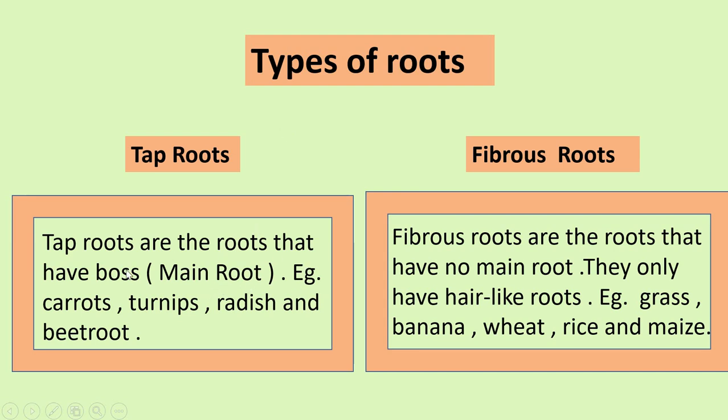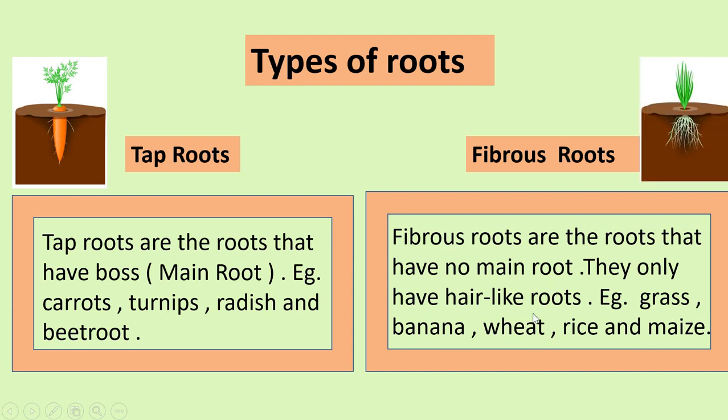Now, what are tap roots? Tap roots are the roots that have boss, main root. That is, carrots, turnips, radish, and beetroot. Fibrous roots are the roots that have no main root. They only have hair roots. Like grass, banana, wheat, rice, and maize. You will be remembering the pictures. Then it will be very clear for you. What are tap roots and what are fibrous roots? Okay?